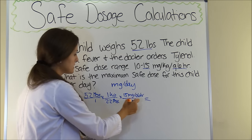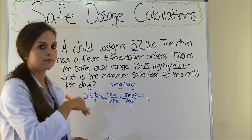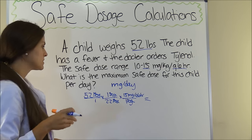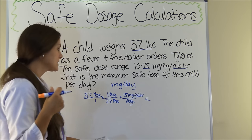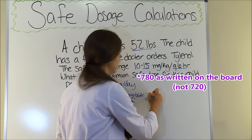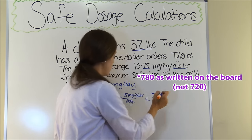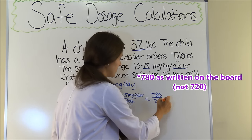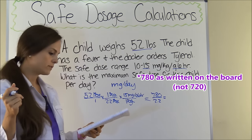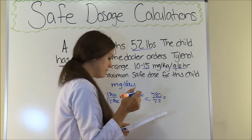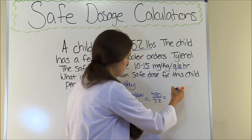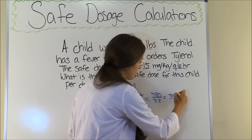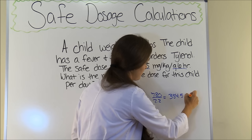We need to convert to milligrams per day, so let's first solve this part for the individual dose. Multiply everything at the top: 52 × 1 × 15 = 780. Multiply everything at the bottom: 1 × 2.2 × 1 = 2.2. Then 780 ÷ 2.2 = 354.5 (repeating), which we round to 354.5 milligrams per dose.